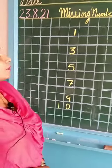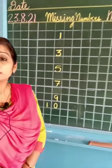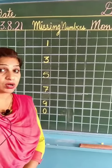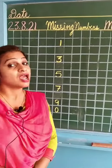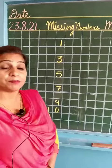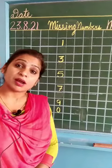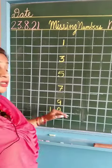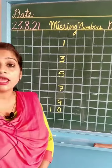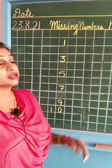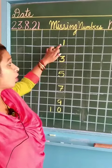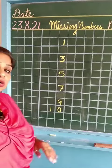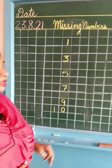So, you have done missing numbers before, right? We have done 1 to 9 missing numbers. Now we have completed the counting up till 10. We have completed the 10th counting. So we will revise missing numbers from 1 to 10. Let's begin.